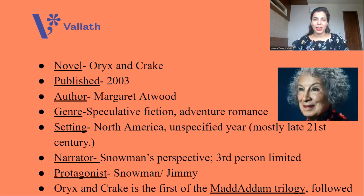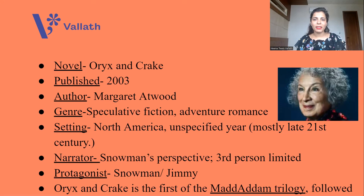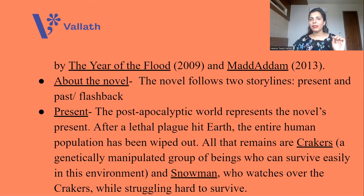The setting of Oryx and Crake is North America, but the year is not specified — mostly it is the late 21st century. The narrator is from Snowman's perspective; basically the protagonist is Snowman, and there is a third person limited narrator. Protagonist is Snowman, also known by the name Jimmy. Oryx and Crake is a part of a trilogy — the first of the MaddAddam trilogy. This is important from a competitive exam point of view. The Mad Adam trilogy's first novel is Oryx and Crake, followed by The Year of Flood of 2009, and the third novel is MaddAddam of 2013.